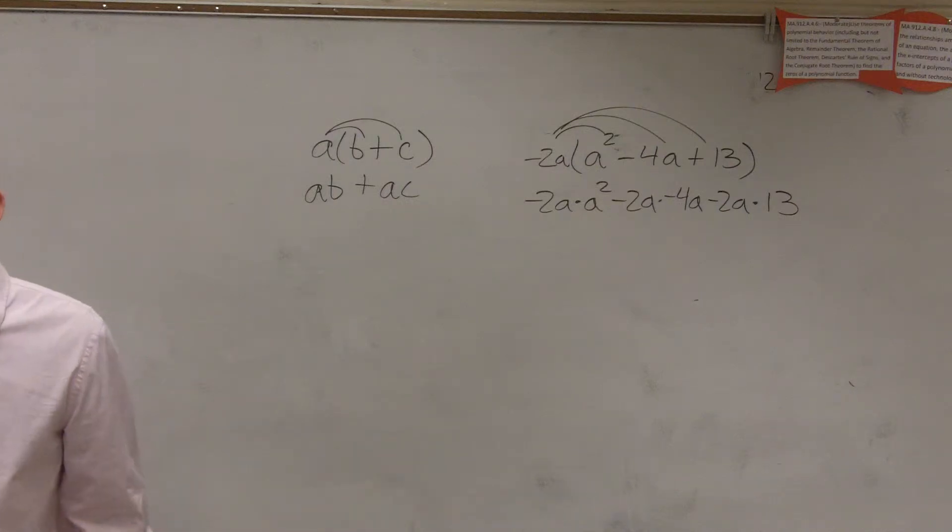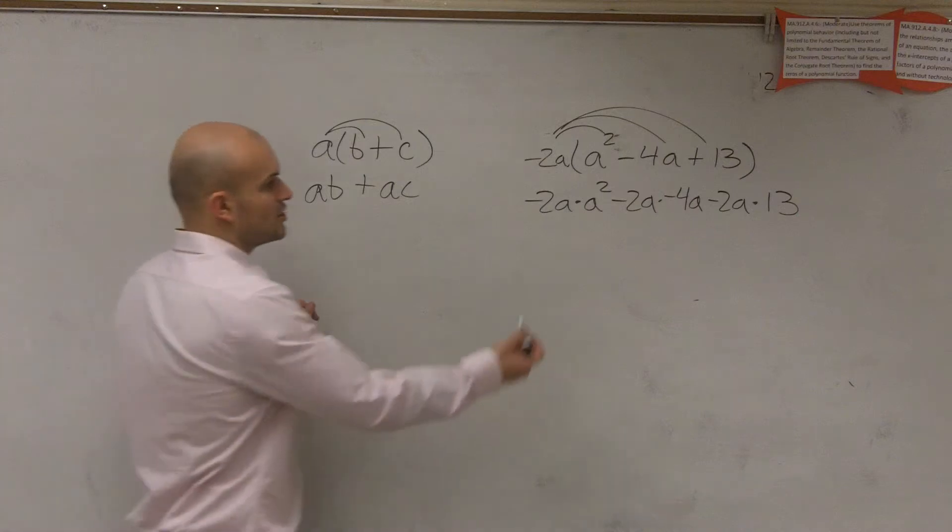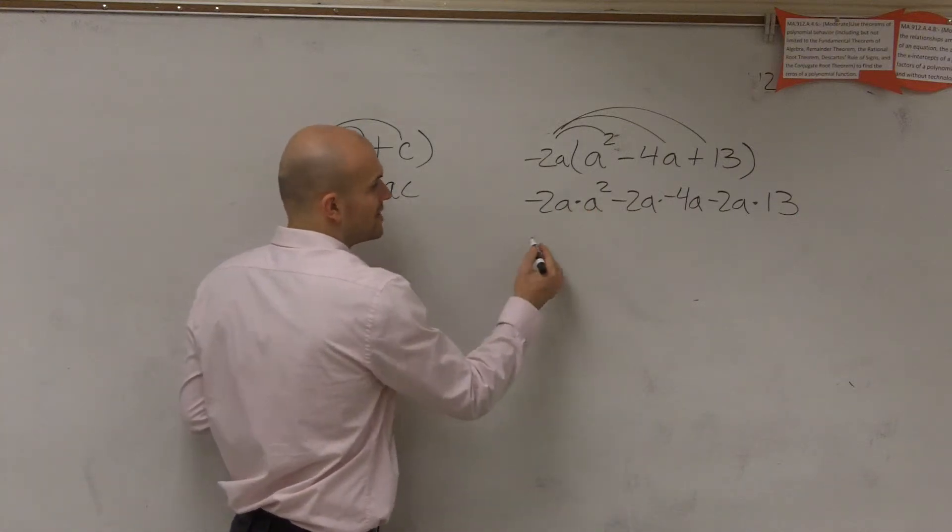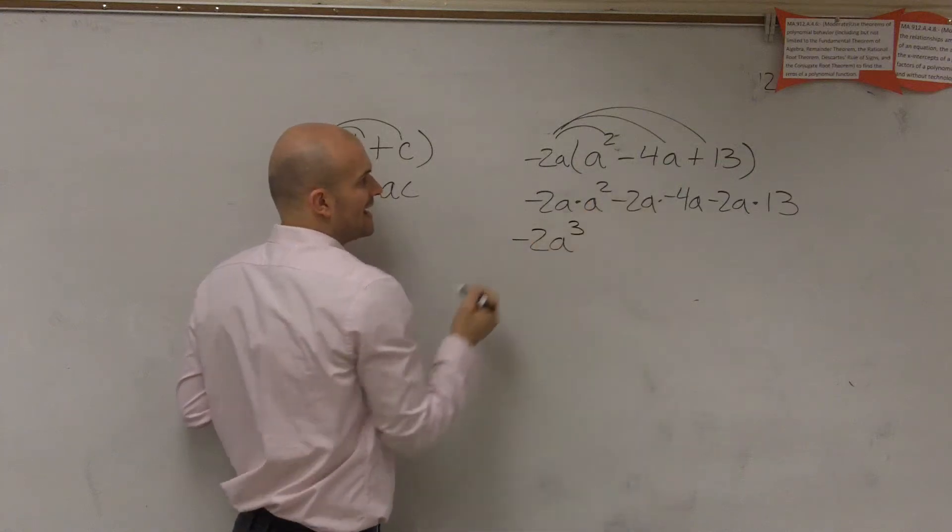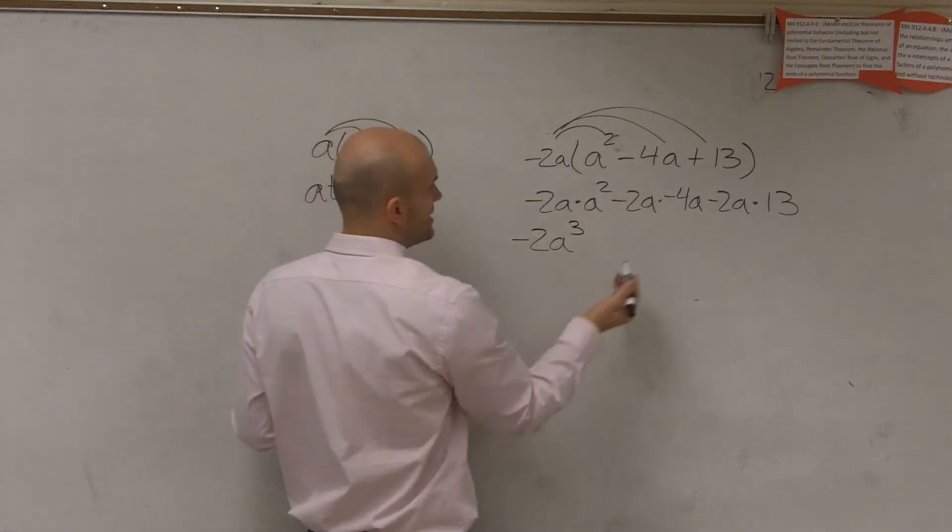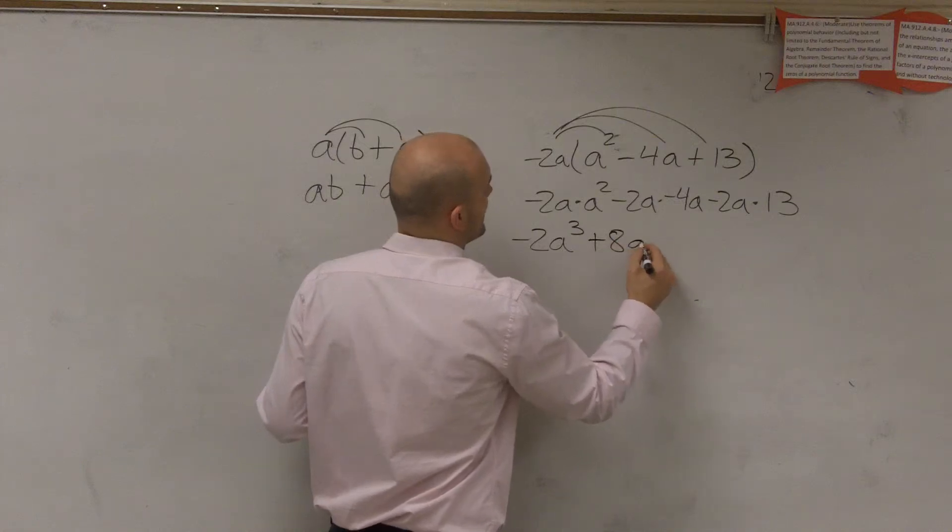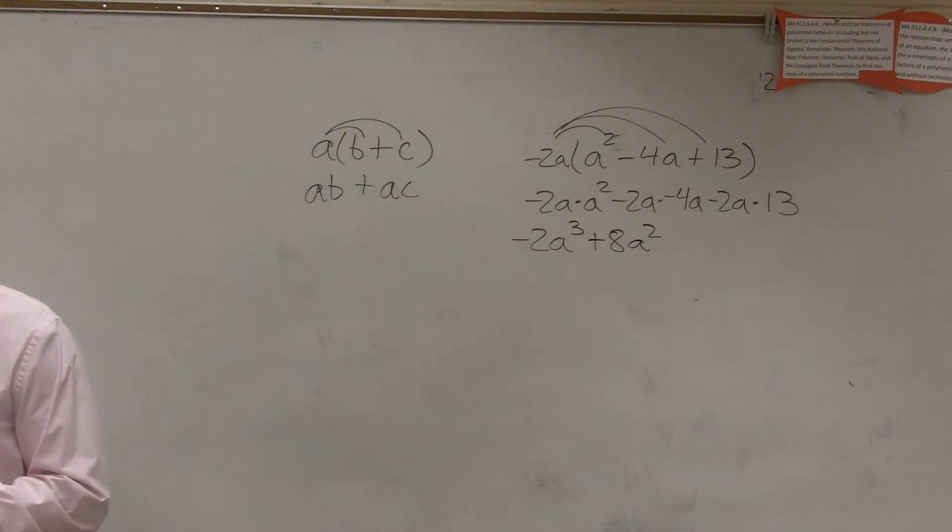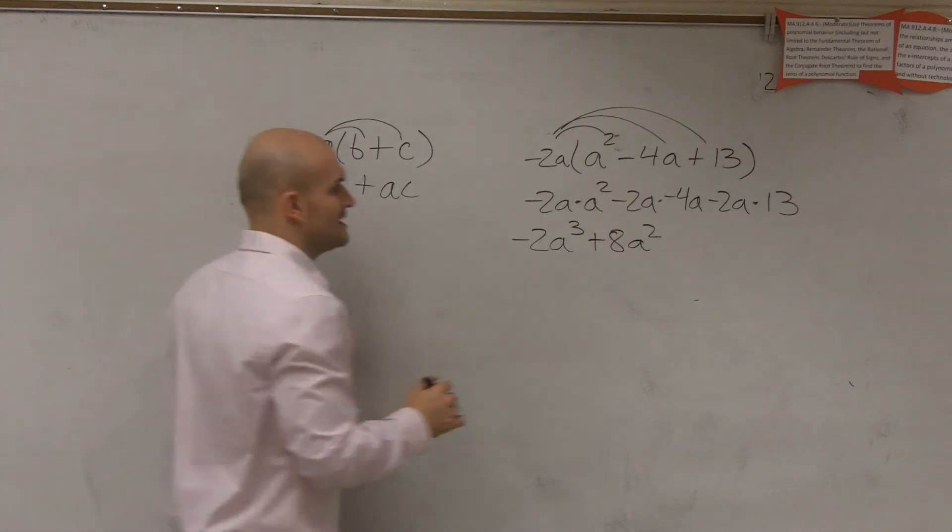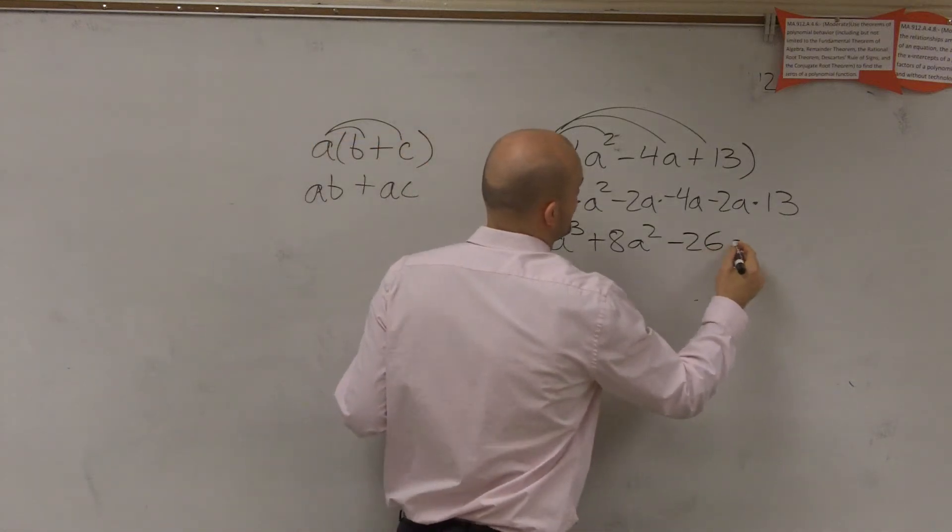Now, when applying multiplication, it's going to be very important that we follow our properties of exponents. So negative 2A times A squared is going to give us negative A cubed. Negative 2A times negative 4A is going to give us positive 8A squared. And negative 2A times 13 is going to give us negative 26A.